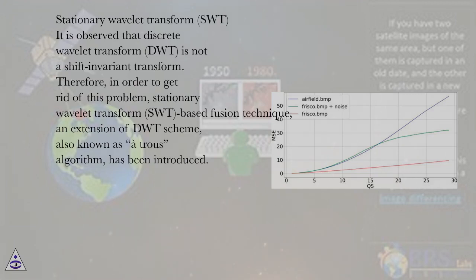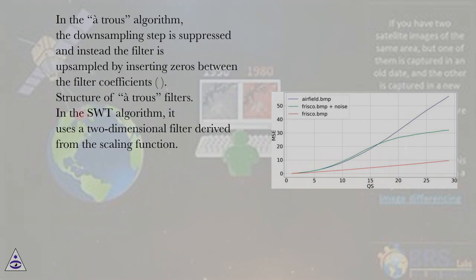Stationary Wavelet Transform (SWT): It is observed that Discrete Wavelet Transform (DWT) is not a shift-invariant transform. Therefore, in order to get rid of this problem, Stationary Wavelet Transform based fusion technique, an extension of DWT scheme also known as à trous algorithm, has been introduced. In the à trous algorithm, the downsampling step is suppressed and instead the filter is upsampled by inserting zeros between the filter coefficients.